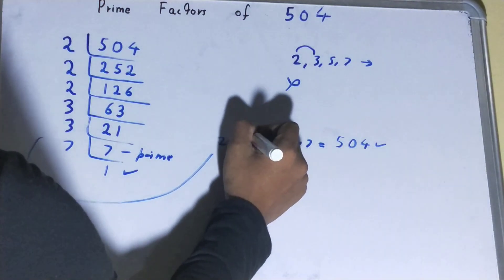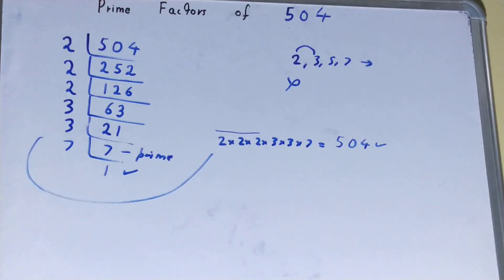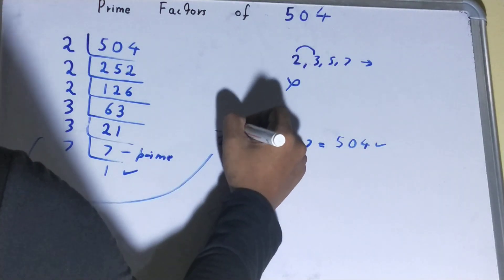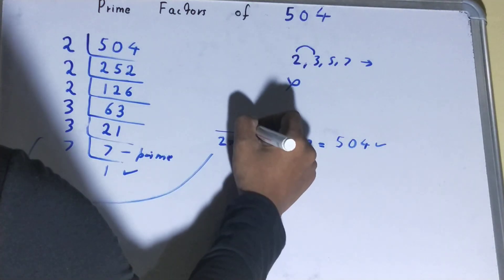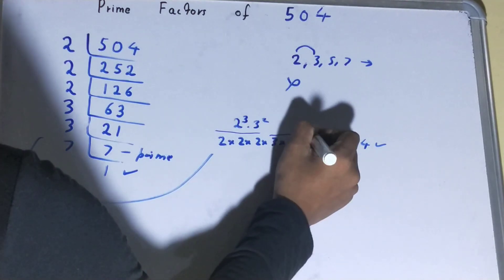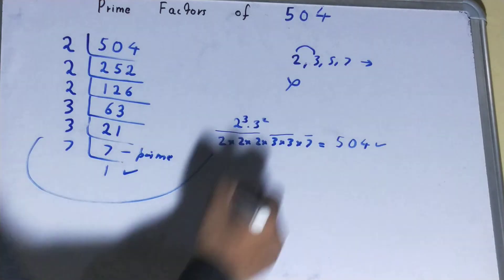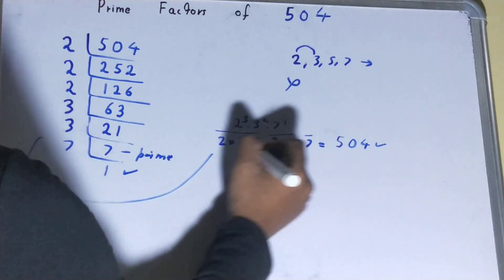You can also rewrite it in a different way. You have 3 times 2, so you can write it as 2³. You have 2 times 3, so you can write it as 3². You have 1 times 7, so you can write it as 7¹. So you can write it this way or that way, it's up to you.